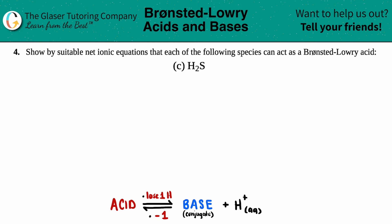Number four, show by a suitable net ionic equation that each of the following species can act as a Bronsted-Lowry acid, and then we have letter C out of the bunch. So in this case, we just need to write an equation showing that H2S is a Bronsted-Lowry acid.